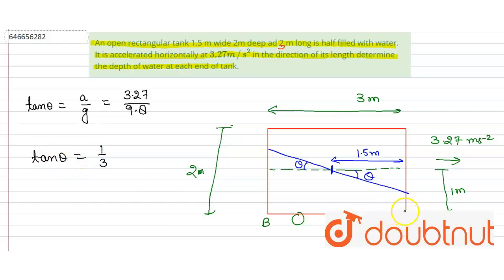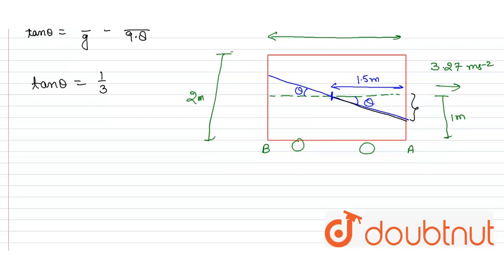Now to find the depth at A, we know that the water surface will be like this. So depth at A will be 1 minus this distance. So we can write depth at A will be equal to 1 minus 1.5 into tan theta, and this will come out 0.5 meter.